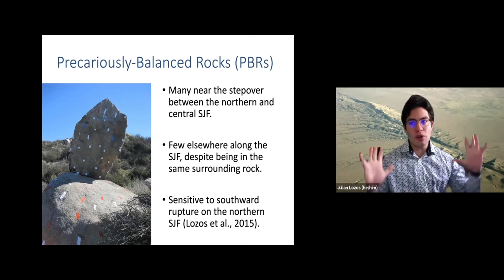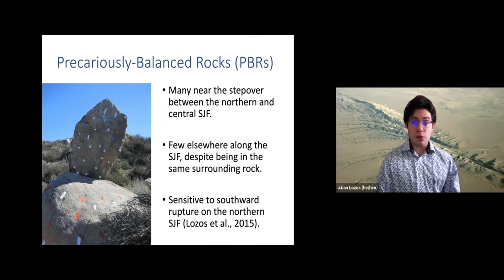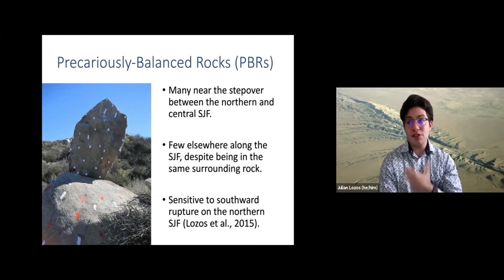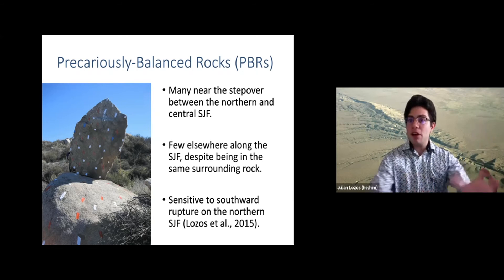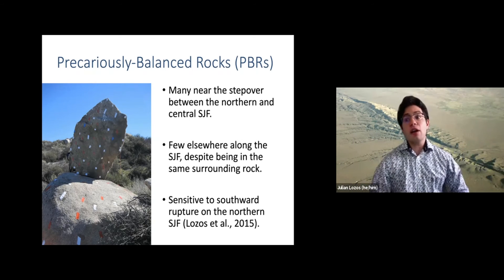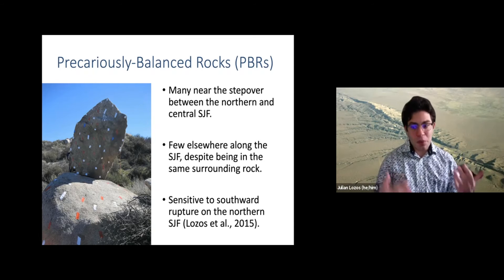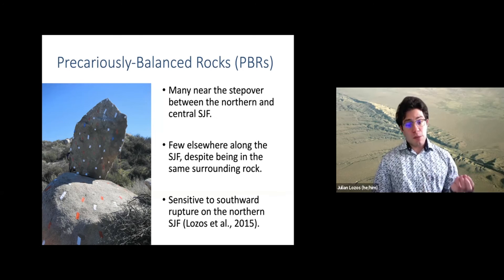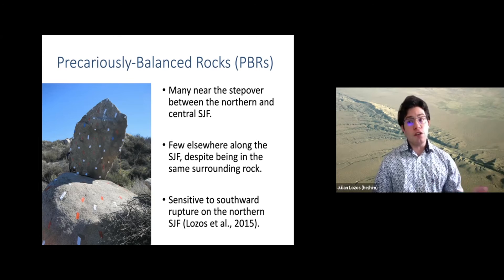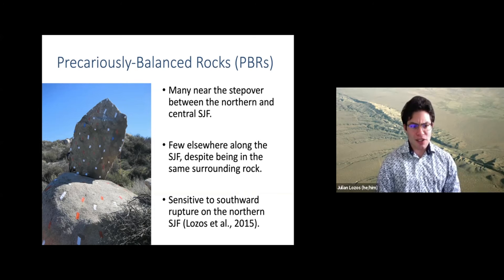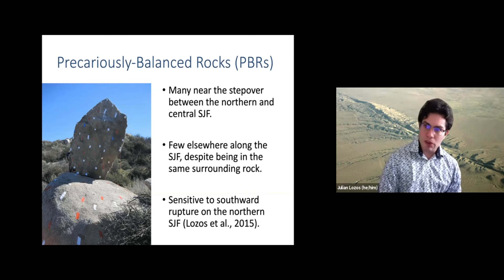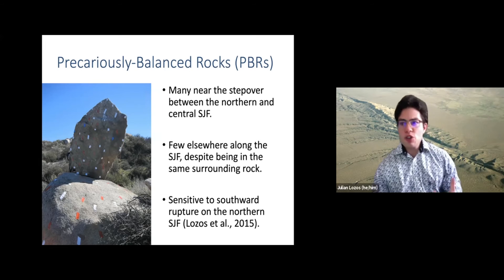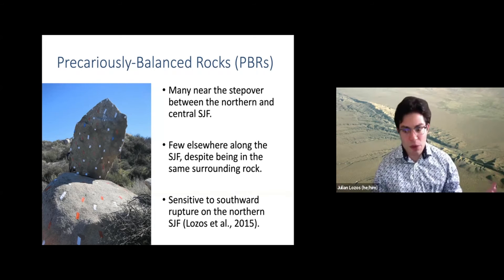This is despite the whole area being in the Peninsular Ranges block — the same granodiorite with similar weathering conditions. So you would expect similar weathering everywhere, but you see a lot of precariously balanced rocks near the step-over and not a lot elsewhere along the San Jacinto. This actually motivated my dissertation research to look at that step-over. In that research, I found that these precarious rocks in the step-over are really sensitive to southward directed rupture on the northern San Jacinto — if rupture is coming at them from north to south, they would be much more likely to topple. The fact that the rocks are there suggests ruptures going away from them.